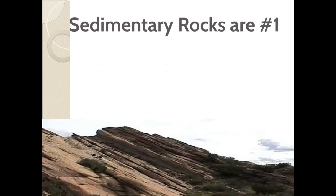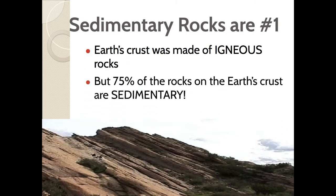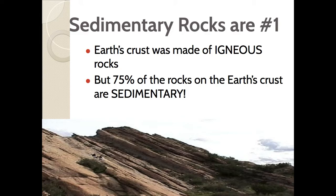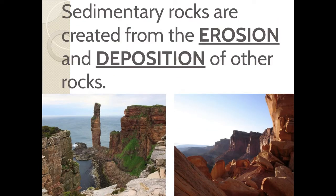Sedimentary rocks are the most common types of rocks on the Earth's surface. If we go back to last unit and think about how rocks are made — crust is created at divergent oceanic-oceanic boundaries at mid-ocean ridges. All of that is igneous rock when it starts, but rocks on the surface tend to be sedimentary. That's because sedimentary rocks are created from the erosion and deposition of other rocks. Once a rock gets on the surface, it gets exposed to air and water, which makes it break down and move, forming a new rock. That's why sedimentary is the most common.